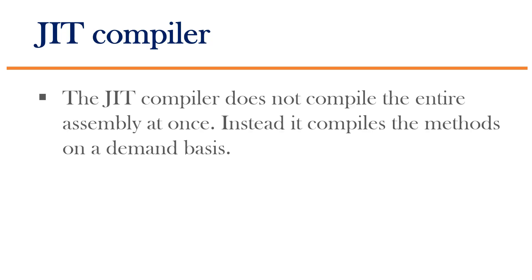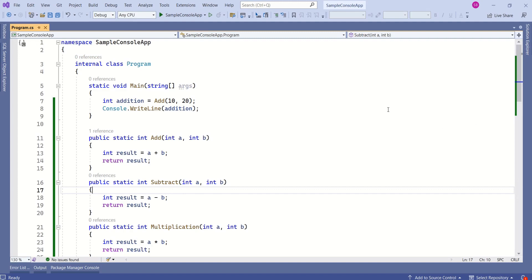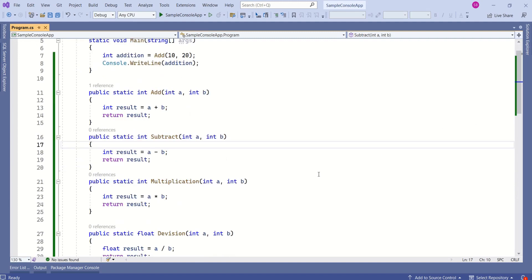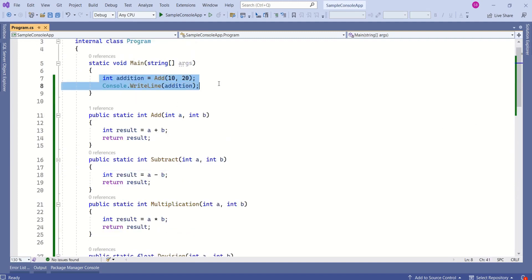Here is an important thing to understand. The JIT compiler does not compile the entire assembly at once. Instead, it compiles the methods on a demand basis. If you look at this application, we have four different methods. But we are calling only single method, that is add method. When the JIT compiler is called, it will compile only add method. It will not compile rest of the methods.